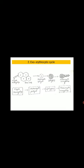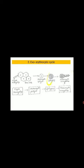In the exo-erythrocytic cycle, the crypto-merozoites enter fresh liver cells, where they grow rapidly and become spherical in shape — this stage is known as metacryptozoites. These metacryptozoites undergo schizogony, resulting in thousands of daughter nuclei known as metacrypto-merozoites. Both cryptomerozoites and metacryptomerozoites are formed during this phase.